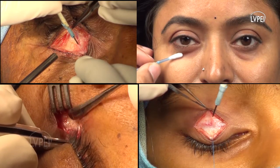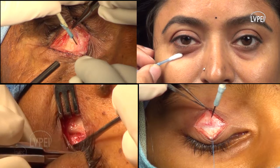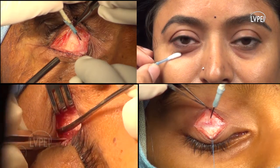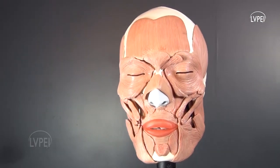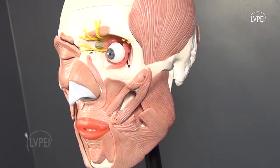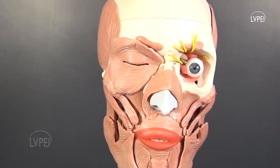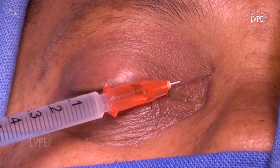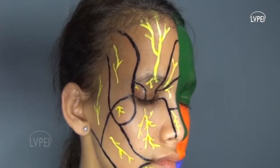Oculoplastic and facial aesthetic procedures require a thorough knowledge of the neurovascular and bony anatomy of the face and periorbital region. This video demonstrates important periocular surface anatomy, soft tissue and bony landmarks on a simulated skull model, a human volunteer, and live injection techniques to simplify the understanding of common periorbital nerve blocks.